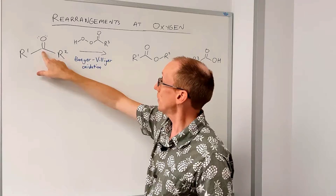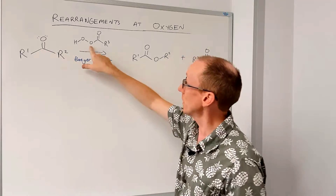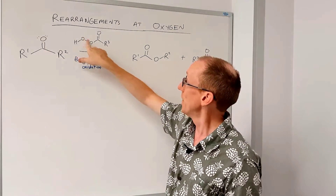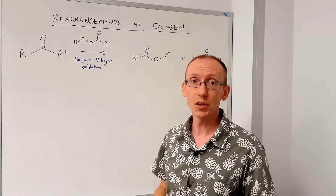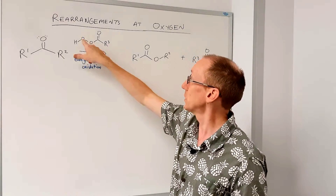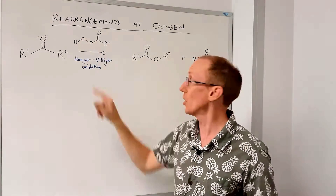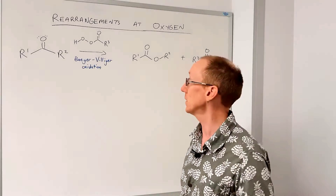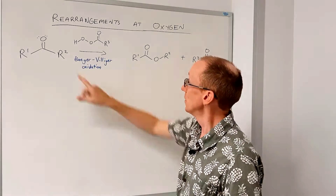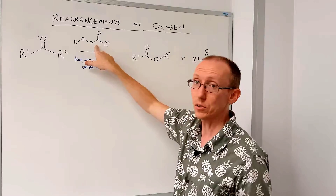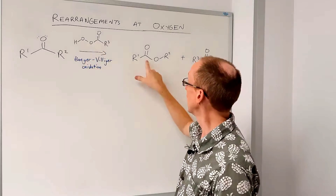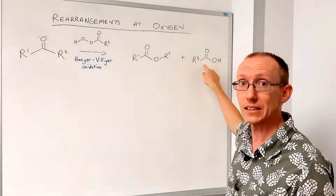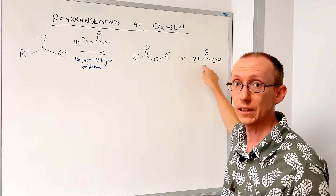A ketone can be treated with a peracid — a carboxylic acid that has been turned into an oxidizing species by making this O-O bond — so it's a peracid, or percarboxylic acid. The treatment of a ketone with this type of oxidant leads to esters, and the side product is a simple carboxylic acid.